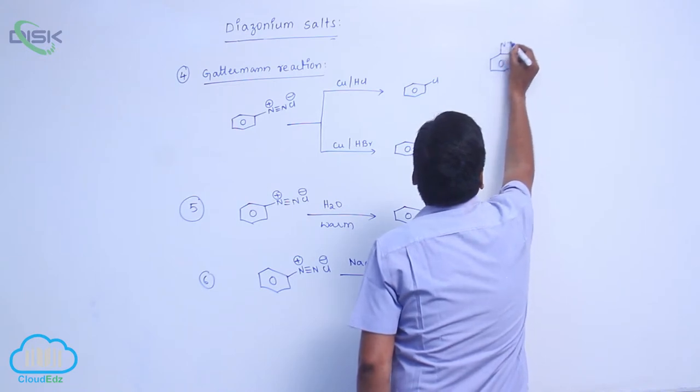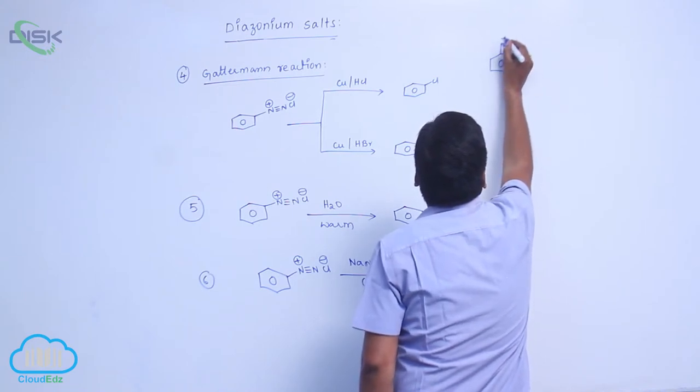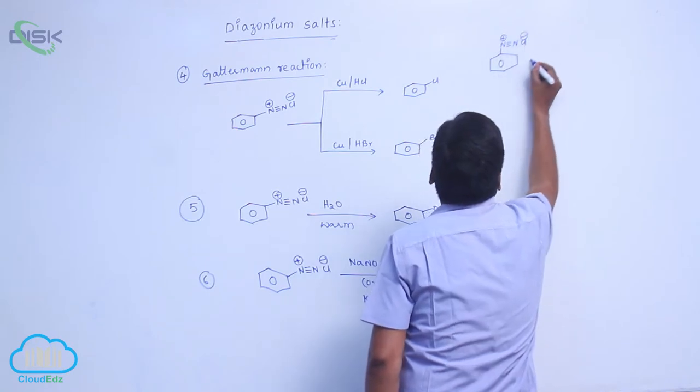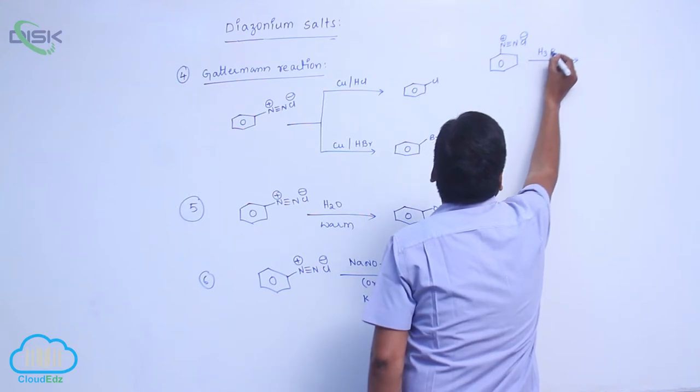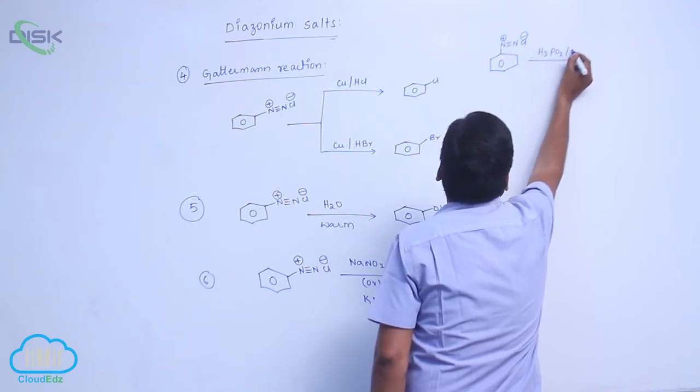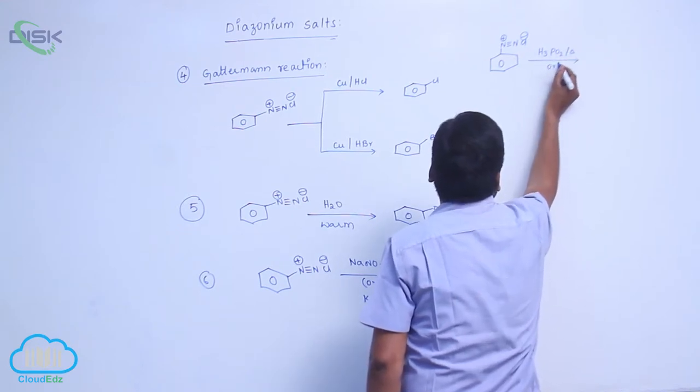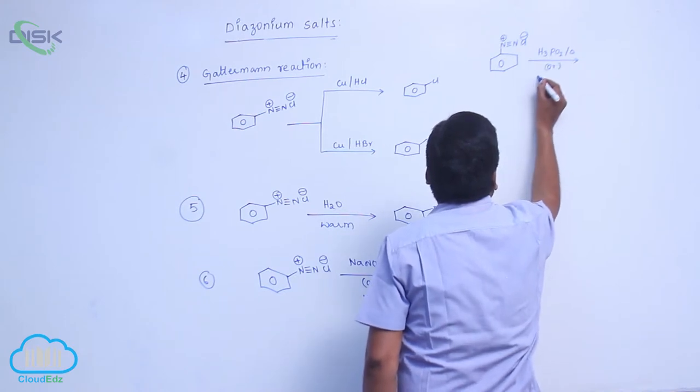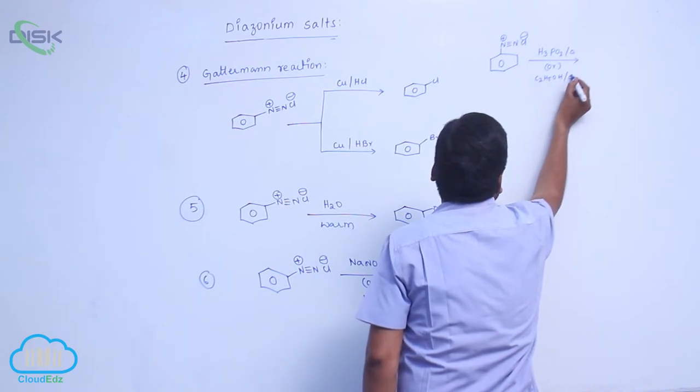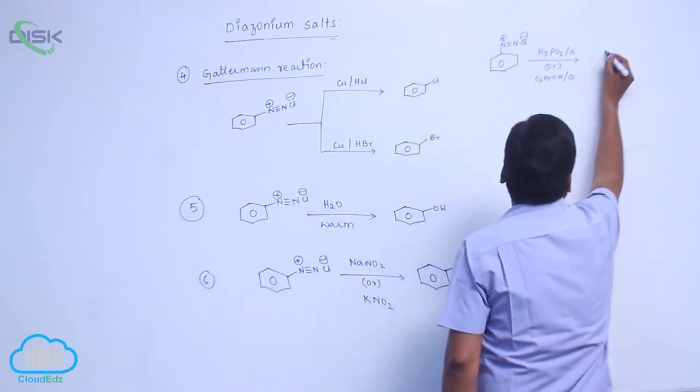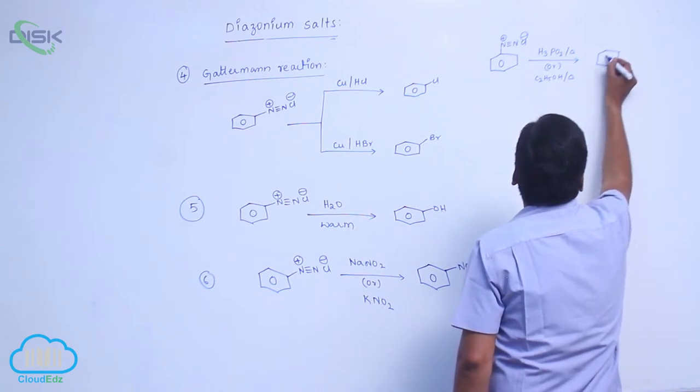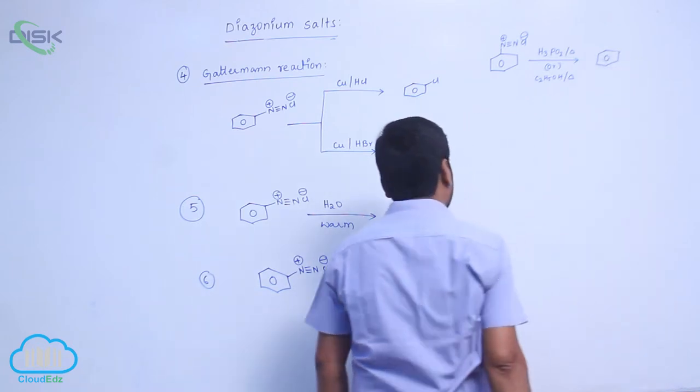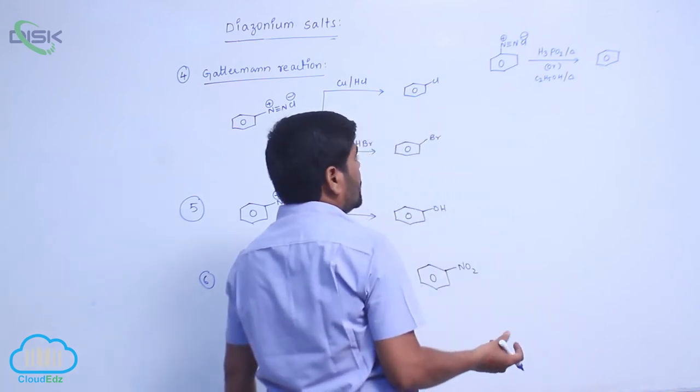Benzene diazonium chloride reacts with hypophosphorous acid, which can act as a reducing agent, or ethyl alcohol followed by heating to form benzene.